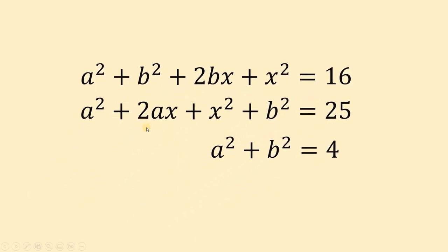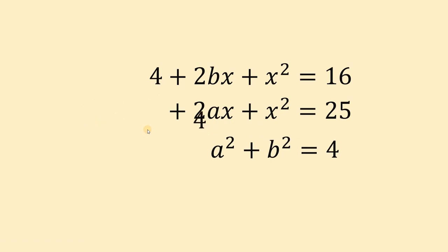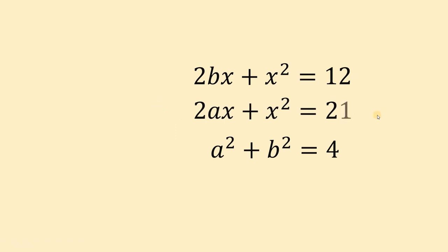Now, since a² + b² = 4 from the second equation, we can substitute into the first and third equations. In the first equation, replacing a² + b² with 4 gives us 4 + 2ax + x² = 25. Subtracting 4 from both sides: 2ax + x² = 21. Doing the same on the third equation, replacing a² + b² with 4: 4 + 2bx + x² = 16. Subtracting 4: 2bx + x² = 12.